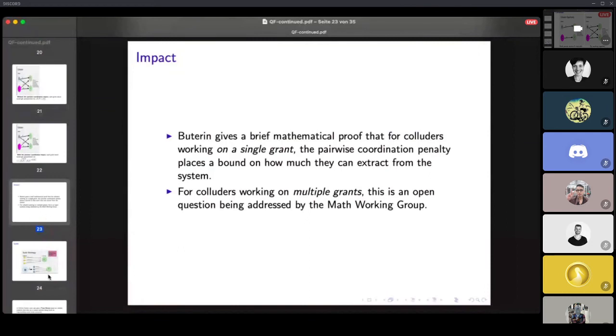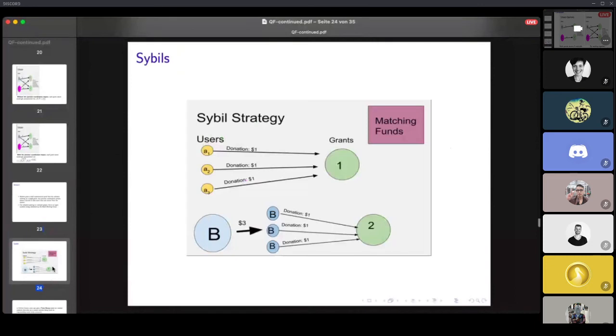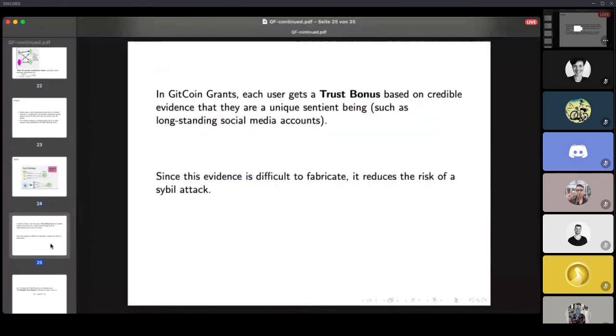The final potential attack or potential bad action that we discussed was the Sybil strategy, where B might try to pretend to be multiple different people. If B gives three copies of himself one dollar each, then the funds for grant two will match the funds for grant one.